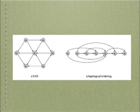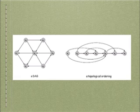DAGs are a very common structure in computer science because many kinds of dependency networks are acyclic. Thus DAGs can be used to encode precedence relations or dependencies in a natural way. Suppose we have a set of tasks labeled {1, 2, 3, ..., n} that need to be performed, and there are dependencies among them stipulating that for certain pairs i and j, task i must be performed before task j.